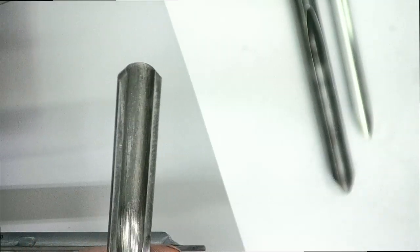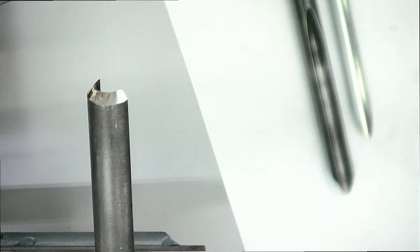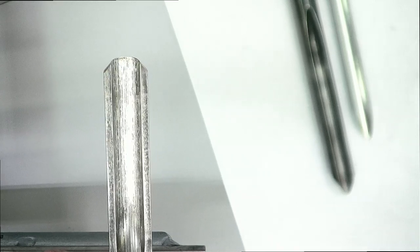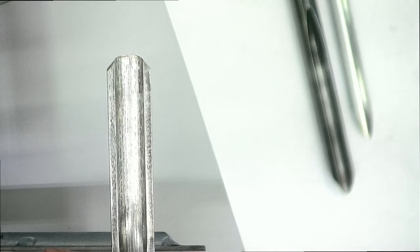The spindle roughing gouge has that same 40 degree bevel angle all the way around the edge and it's ground straight across. There's no sweep to this grind.